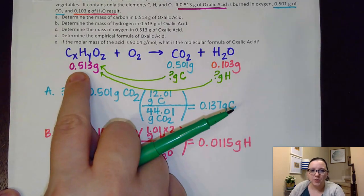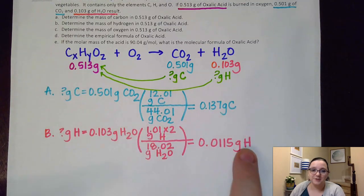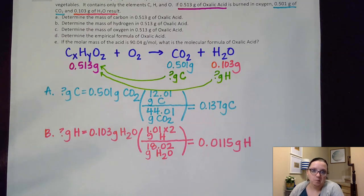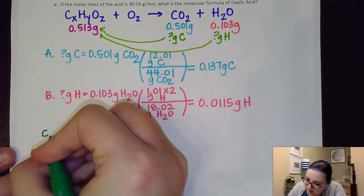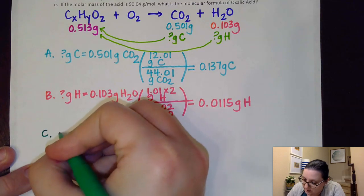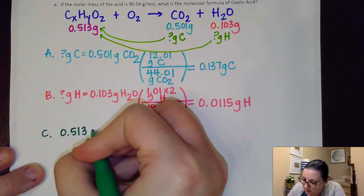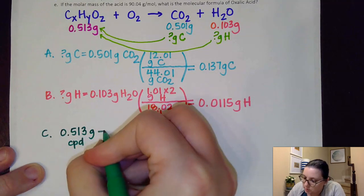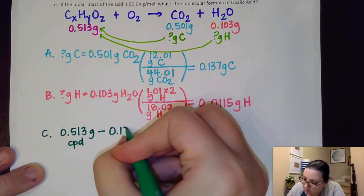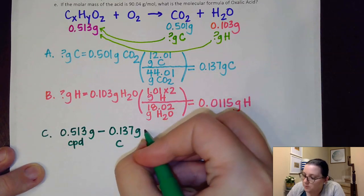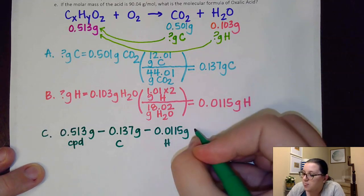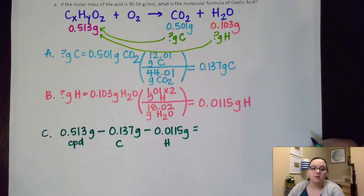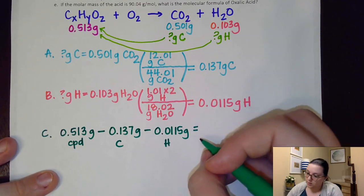However, if I remember that this 0.513 grams is from a combination of the carbon, the hydrogen, and the oxygen, if I know the carbon and the hydrogen, I should be able to just subtract those off and get how much of that mass came specifically from oxygen. So that's how we're going to do this. So for part C, what I would do is I would take this 0.513 grams of the whole compound, and I would subtract off the 0.137 grams that came from just carbon. I would also subtract off the 0.0115 grams that came from just hydrogen. And then that value there would get me the oxygen that was in that compound. That value ends up 0.365.